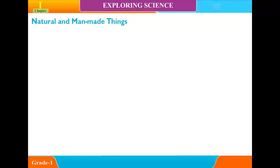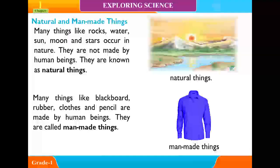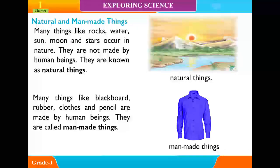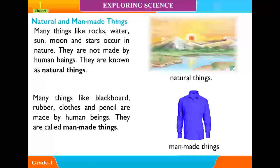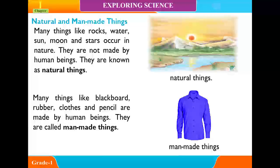Natural and Man-Made Things: Many things like rocks, water, sun, moon, and stars occur in nature. They are not made by human beings and are known as natural things. Many things like blackboard, rubber, clothes, and pencil are made by human beings and are called man-made things.